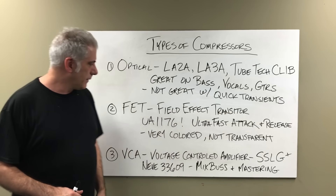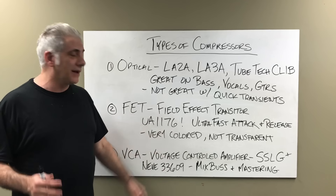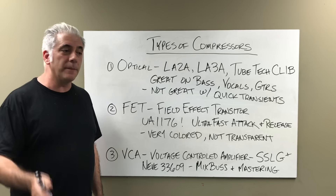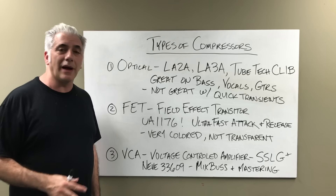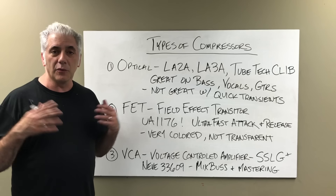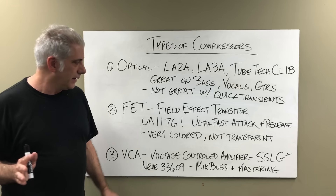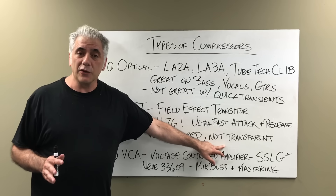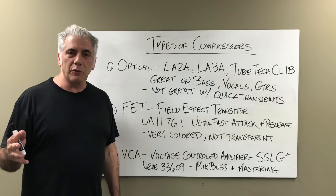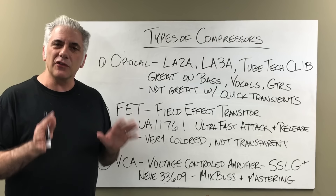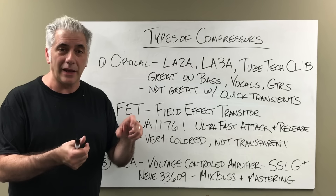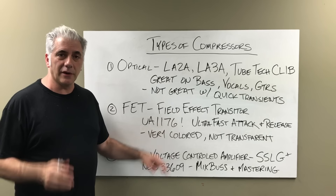The FET compressor — Field Effect Transistor — the main one everyone knows is the UA 1176. It's probably the most widely used compressor in any genre of music, both in hardware and software form. I own the Waves, Bomb Factory, and UAD versions. I like the UAD ones since they modeled their own hardware. These are very colored sounding — not transparent. They start with a 4:1 ratio and have super fast attack and release times. The 1176 is a bit confusing because the controls are backwards — the fastest attack is 7 and the fastest release is 7, all the way to the right. For tracking vocals, this is a go-to compressor.